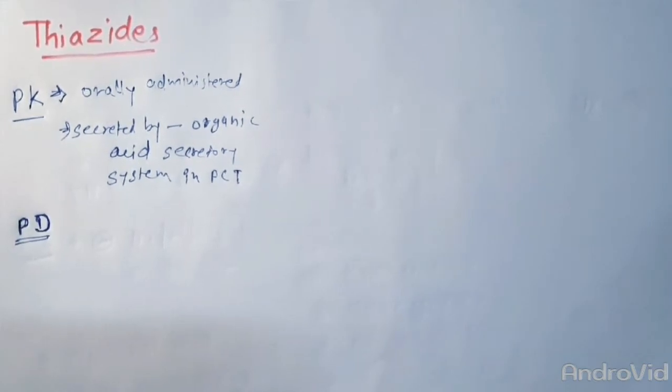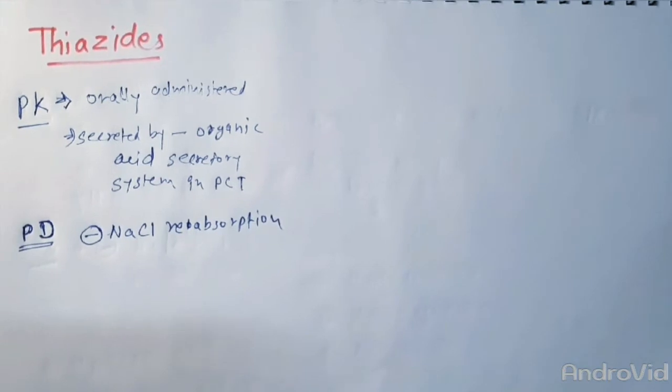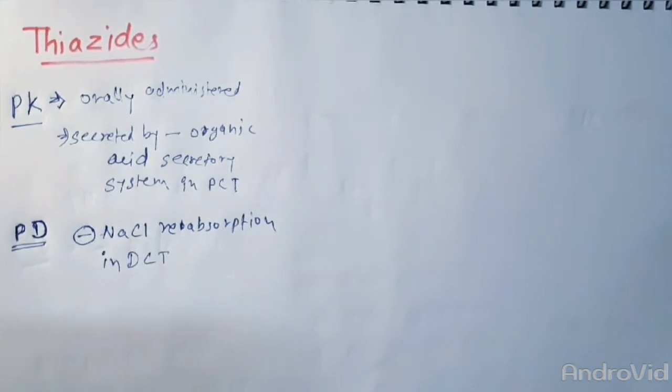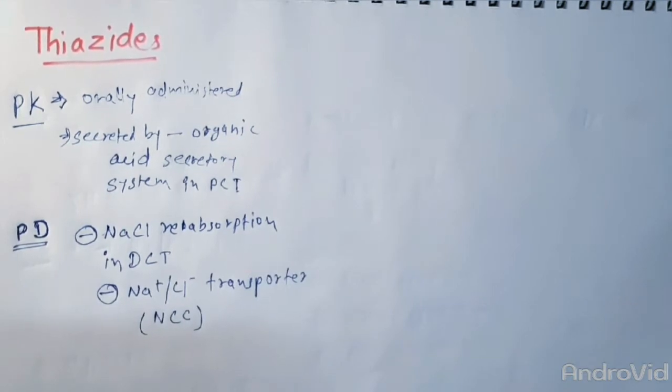They inhibit the NaCl reabsorption from the luminal side of the epithelial cell in the DCT by blocking NaCl transporter or NCC.